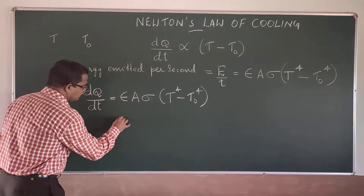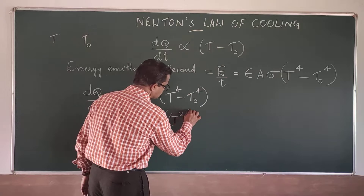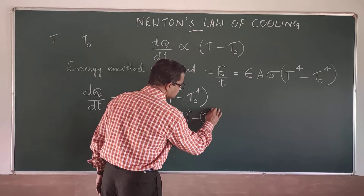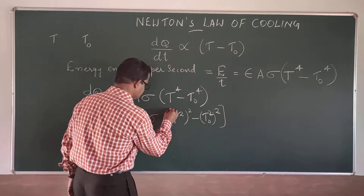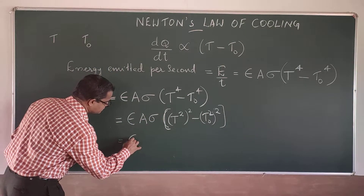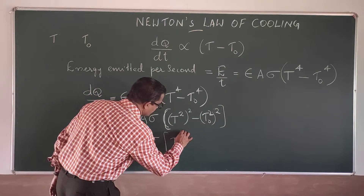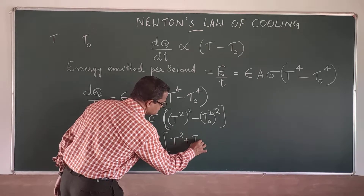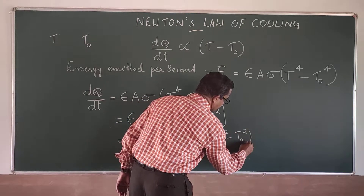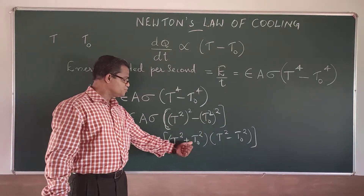This can be rewritten as ε × A × σ × (T² + T₀²) × (T² - T₀²), using the identity A² - B² = (A+B)(A-B). This further factors as ε × A × σ × (T² + T₀²) × (T + T₀) × (T - T₀).